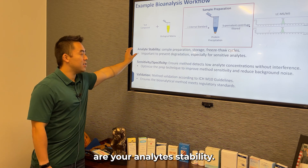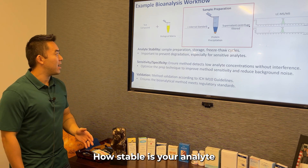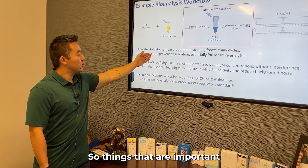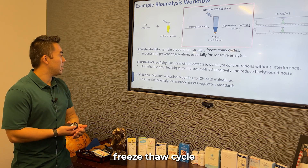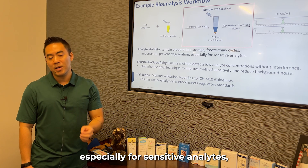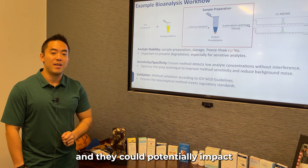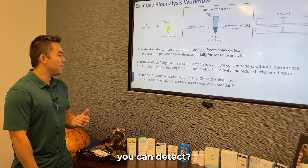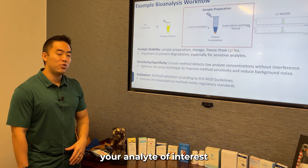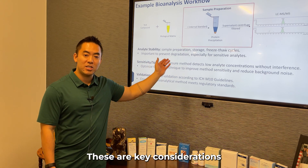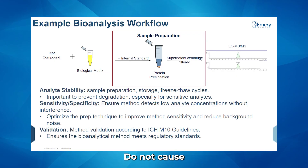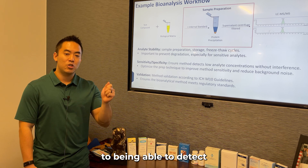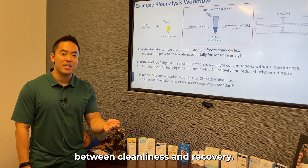When you think about your sample preparation, other key considerations are analyte stability. How stable is your analyte throughout this sample preparation process? How stable is your sample prior to sample preparation? Things that are important include storage conditions and freeze-thaw cycles — these are absolutely critical to prevent degradation, especially for sensitive analytes, and could potentially impact your quantitation. Sensitivity and specificity are also key: sensitivity being the lowest amount you can detect, and specificity being how specific you are in identifying your analyte of interest within this complex matrix. This ensures your sample prep does not cause analyte concentrations to fall below your limit of detection, while cleaning up samples enough to detect what you're interested in — again, the balance between cleanliness and recovery.